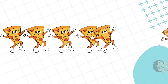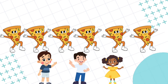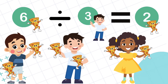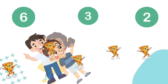Finally, let's talk about division. Division is all about sharing equally. Imagine we have six slices of pizza and three friends. How do we share the pizza equally? Six divided by three equals two — each child will get two slices of pizza. This is called division.